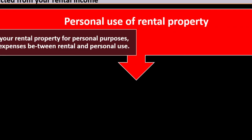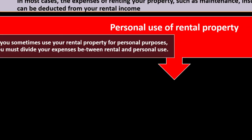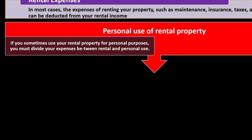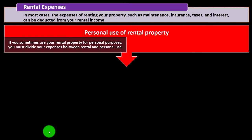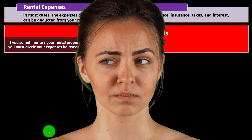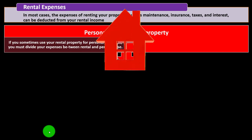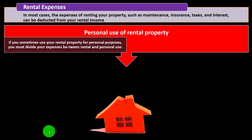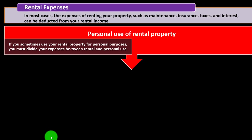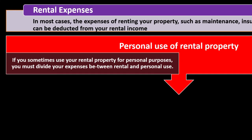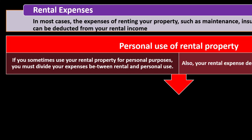Personal use of the rental property: if you sometimes use your rental property for personal purposes, you must divide your expenses between rental and personal use. Once you co-mingle business and personal, it gets complicated. With real estate, it's quite possible to use part of it for rental and part for personal. In that case, you'll need to allocate expenses between rental — which may be deductible — and personal, which may not. Your rental expense deduction may also be limited; see Chapter 5 for more information.